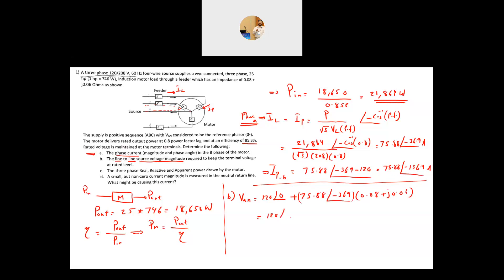Evaluating: 120∠0° + 75.88∠−36.9° × 1∠+36.9°. The angles cancel in the impedance product, and the result gives V_AN = 127.586 V. The line-to-line voltage is then √3 × V_AN, which gives approximately 221 V. That is the answer for part B.